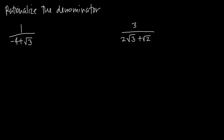In this video, we're talking about how to rationalize the denominator of a fraction when we have radicals in the denominator. Before, we learned that if we had a fraction like 1 over the square root of 3, we like to do what's called rationalize the denominator, which basically just means get the square root out of the denominator.